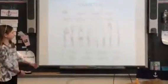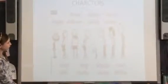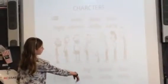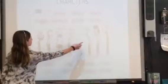The characters are Rowley and Holly Hills, who is Greg's crush. Rowley Jefferson is his best friend. This is Greg and his older brother, who is important in the story.